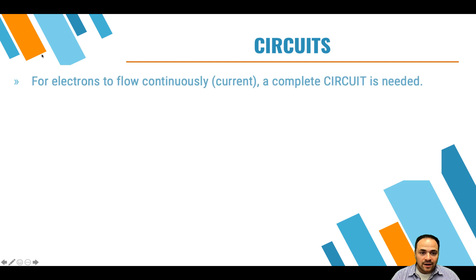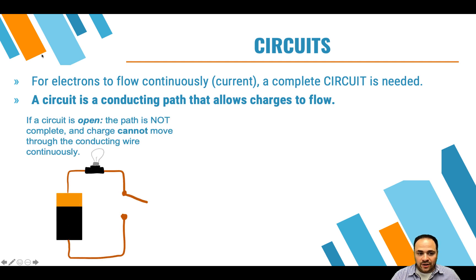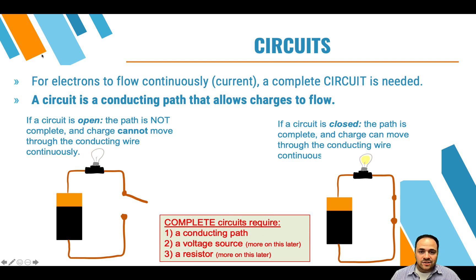In order to have current, we need a complete circuit. A circuit is a conducting path that allows charges to flow. Now, if you have an open circuit, which means it's not a complete path somewhere, there's a gap. The path again is not complete and charges can't flow through this, so you're not going to get current. If the circuit is closed, however, that is a complete path. Charges can flow, and that's how you get the movement of electrons. So a complete circuit requires a conducting path. It requires a voltage source, which we'll talk about later, and it requires a resistor, which we'll talk about later as well.